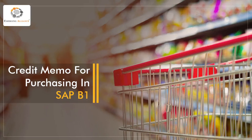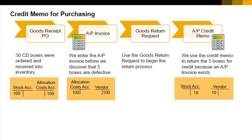In this video, you will get to know in detail about credit memo for purchasing in SAP Business 1. In SAP Business 1, the purchase credit memo functions as your internal documentation of the credit memo process for accounting purposes or to control the shipping of the involved items.